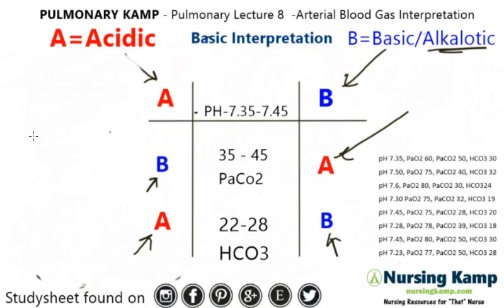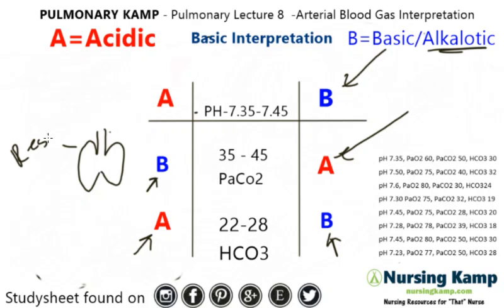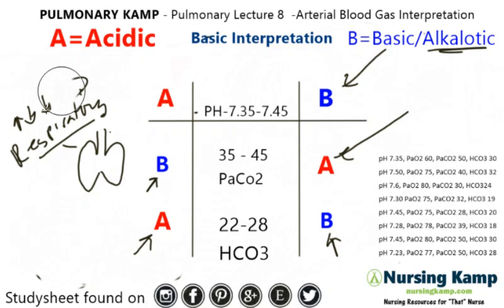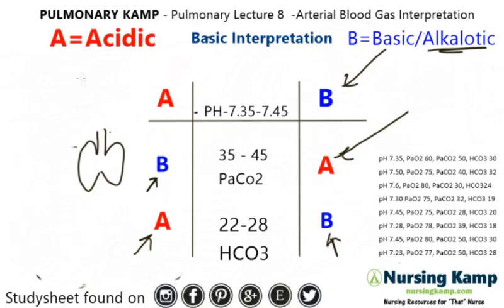We compensate by two different methods. The first method is the lungs — that's called respirations, and that's where we get respiratory acidosis and respiratory alkalosis, because it's compensating by respirations. That's why you'll see a person increase breathing, and if they decrease breathing, generally their CO2 goes up. The second column is called the PACO2.